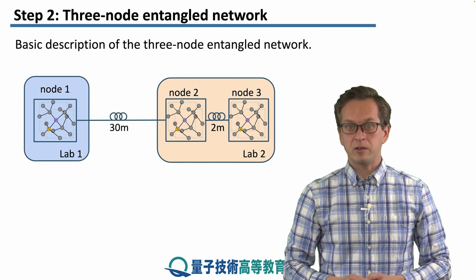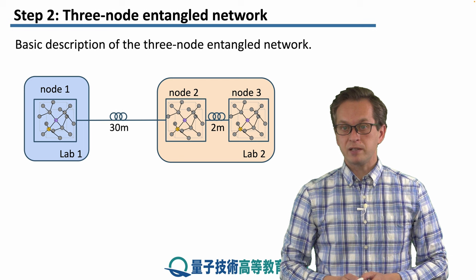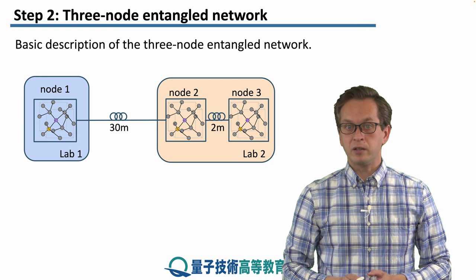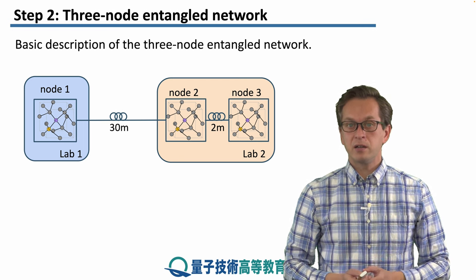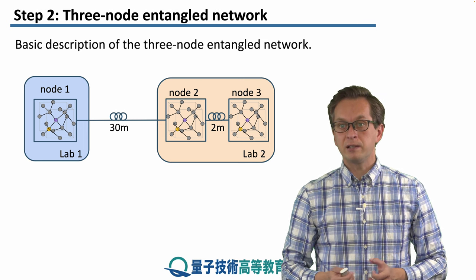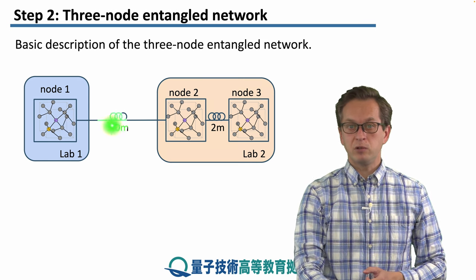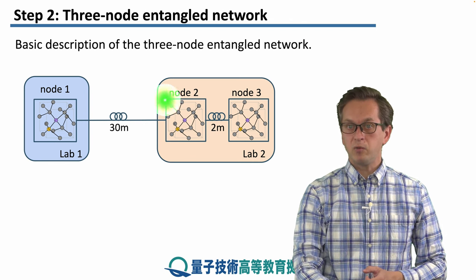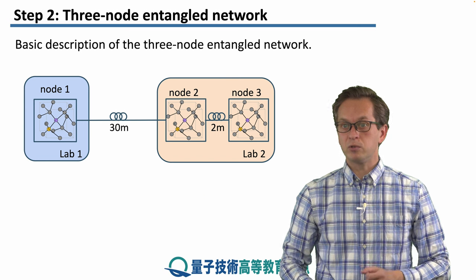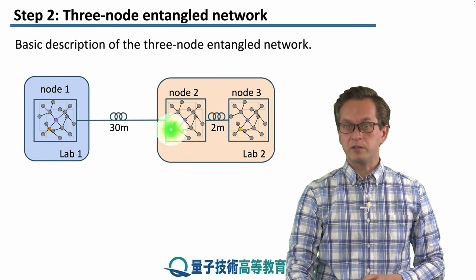Let's see how the setup looks like. Unlike in the previous step, where the nodes were separated by a large distance of over a kilometer, here they were placed in labs which were relatively close to each other. The distance between the two labs was 30 meters, and lab number one contained a single node, while lab number two contained two nodes of the network. Nodes two and three were separated by two meters.